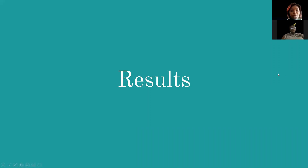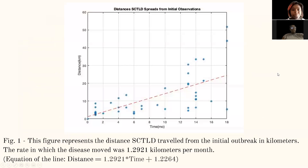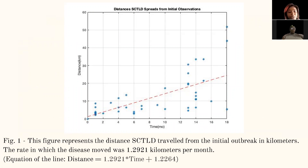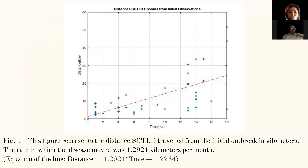Now for our results. This first graph represents the distance that SCTLD traveled from the initial outbreak in kilometers. The disease traveled approximately 1.29 kilometers per month, and the distances were determined using the equation shown below on the slide.